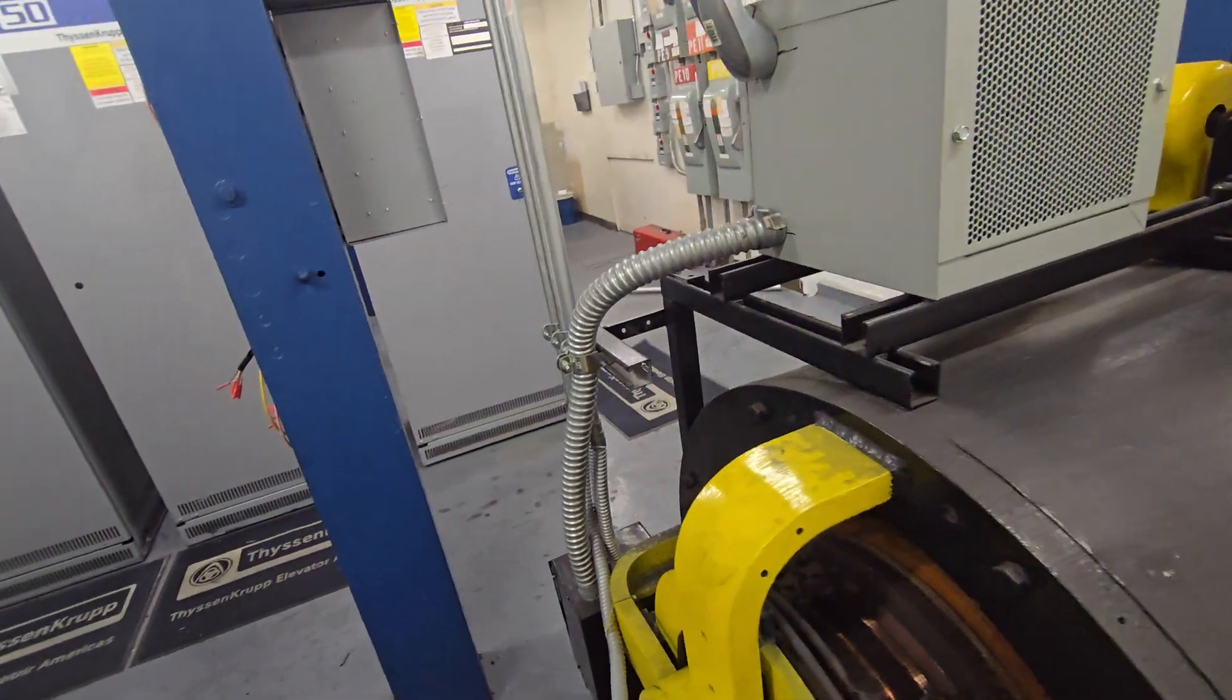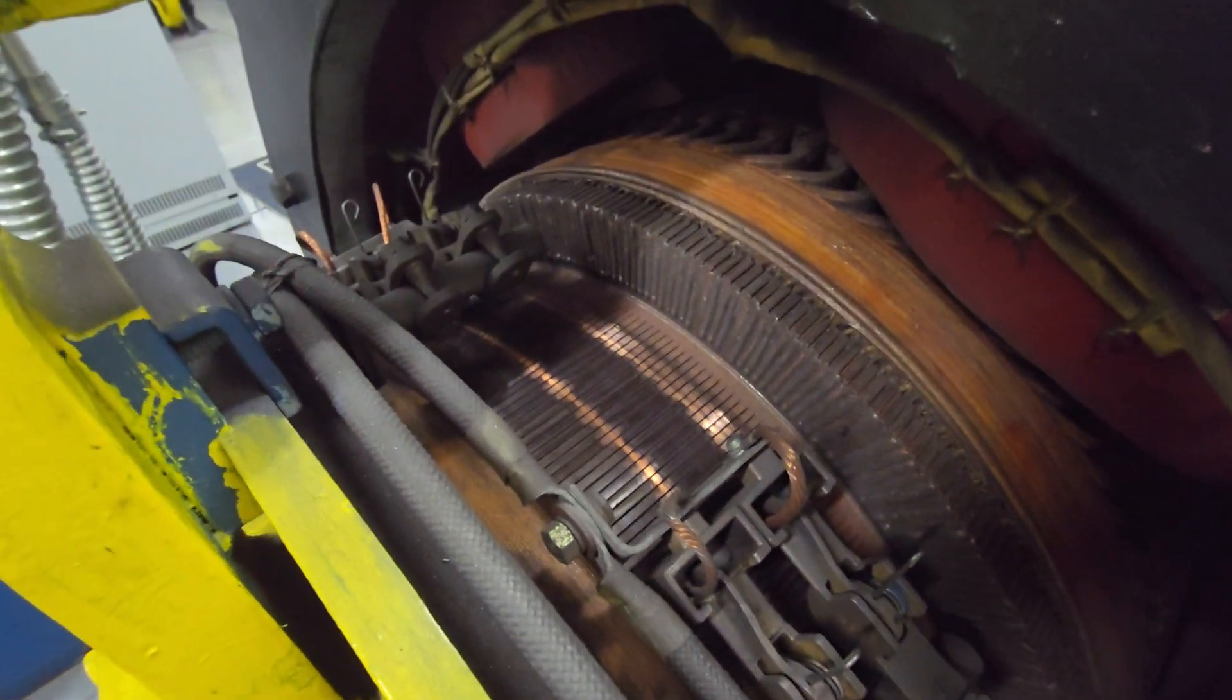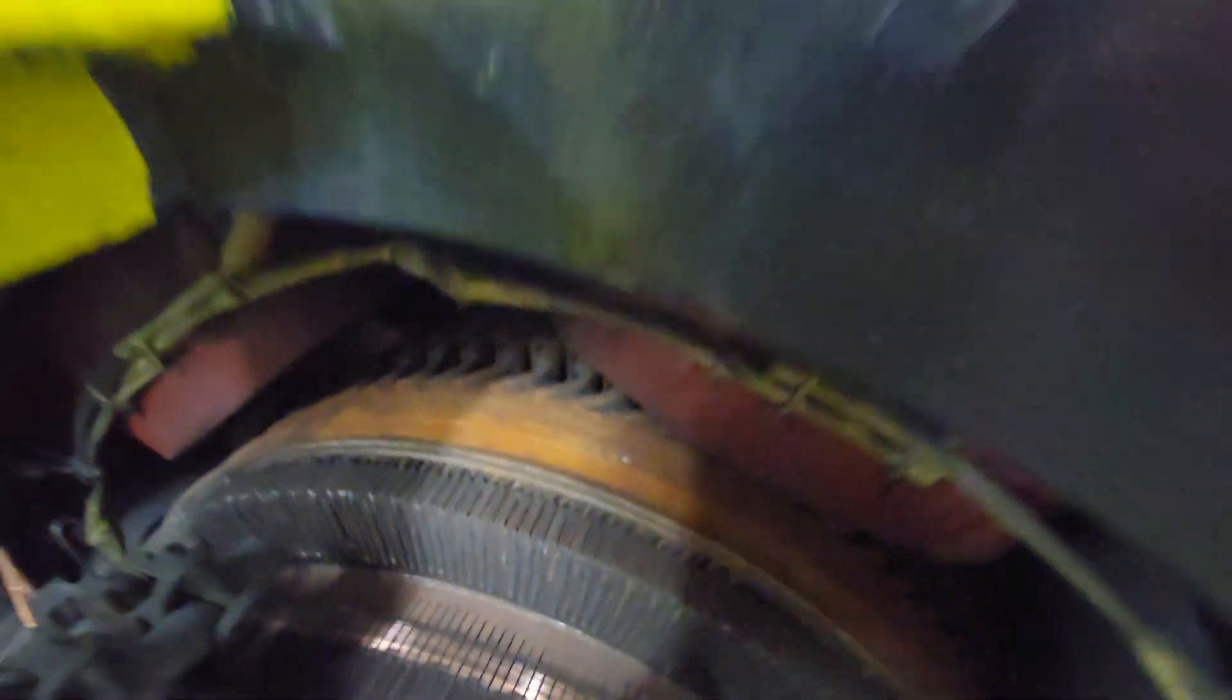Over here is the internals of the motor. So there's the brushes, the commutator. In there you see the field coils and the armature.